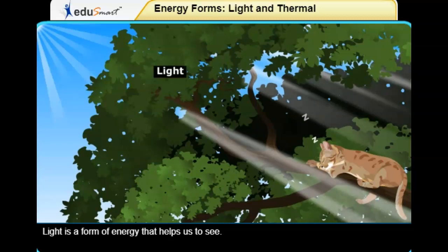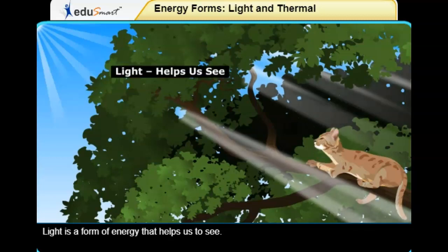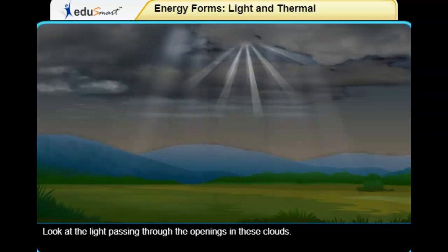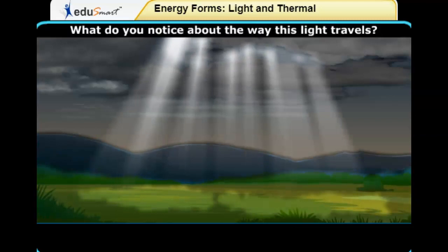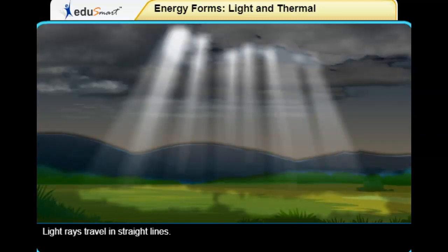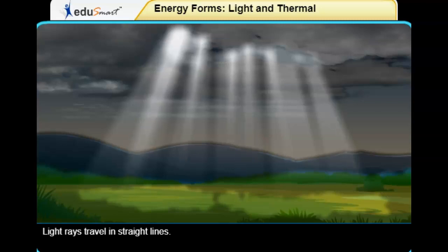Light is a form of energy that helps us to see. Look at the light passing through the openings in these clouds. What do you notice about the way this light travels? Light rays travel in straight lines.